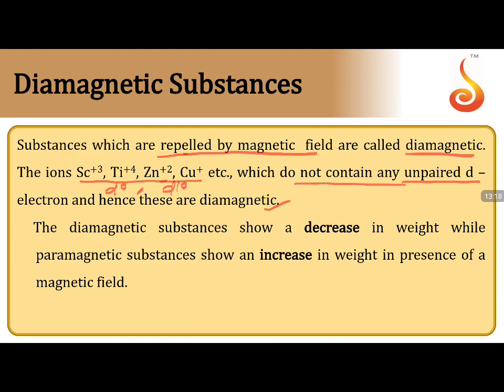An important applicative point: when diamagnetic substances are placed in an external magnetic field, there is a decrease in their weight. When paramagnetic substances are placed in a magnetic field, there is an increase in their weight. This is a very important distinction that can appear in examination questions.